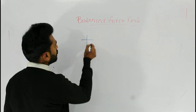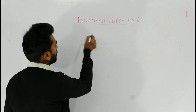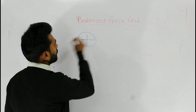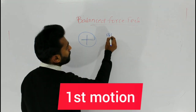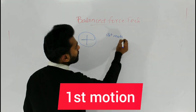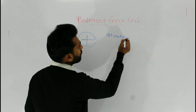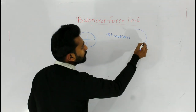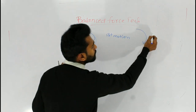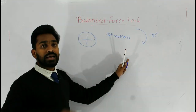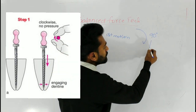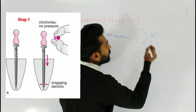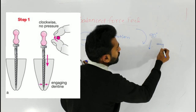Consider there is a cross section of the root canal. The first motion involves a 90 degree clockwise rotation. This causes engagement of the dentine, and the file advances into the canal.